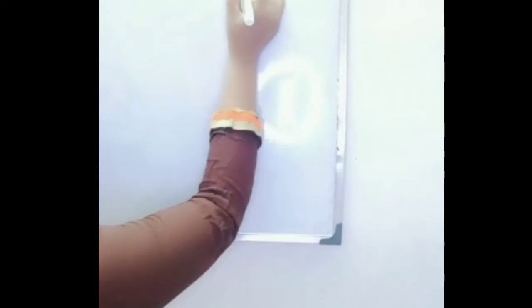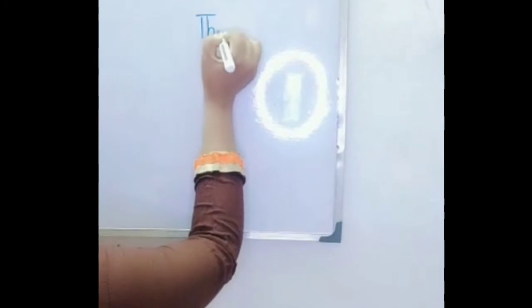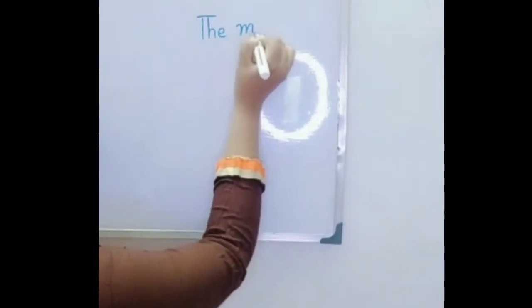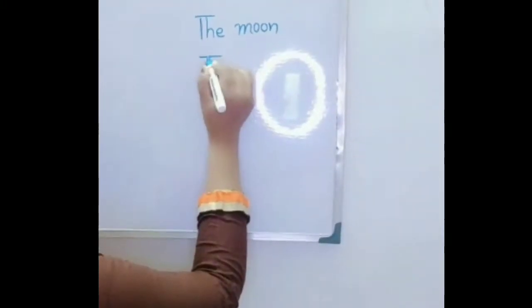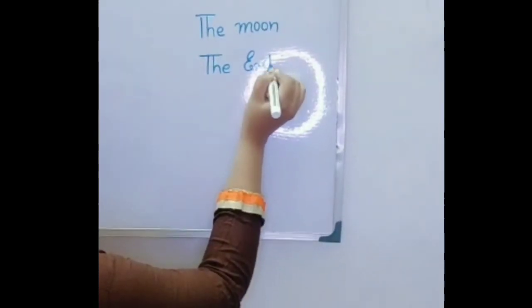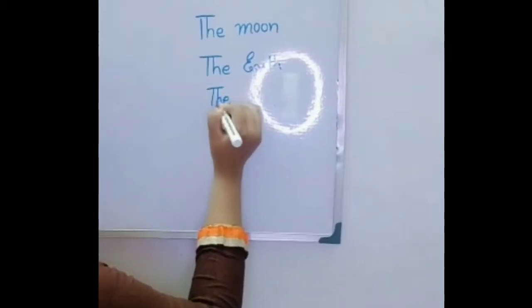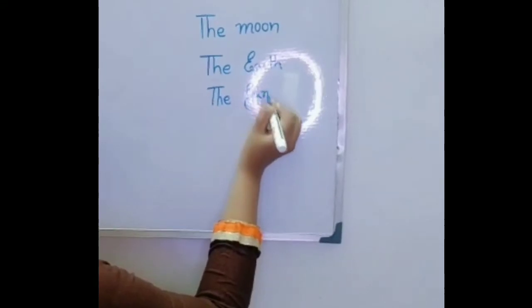Today I will show you some examples where we can use article 'the'. See: the sun, the moon, the earth, the Ganges.